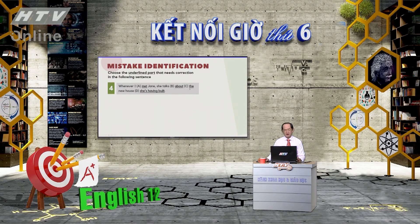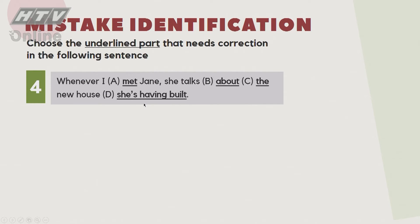Câu số 4: 'Whenever I met James, she talks about the new house she's having built.' Chúng ta dễ dàng loại bỏ đáp án B - 'talks about' không sai; 'the new house' dùng 'the' không sai; 'she's having built' là passive voice của causative form - không sai. Đáp án là A: phải là 'Whenever I meet Jane' - phải dùng present tense.